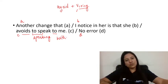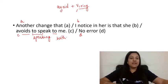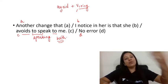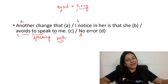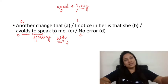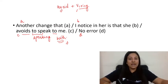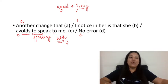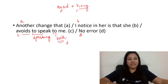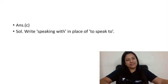Both 'speak to me' and 'speak with me' are correct, but they differ in meaning. 'Speak with' is used when you are conversing — both parties are expected to talk, i.e., a two-way conversation. 'Speak to' is just saying your point. Here the meaning is that she avoids having a conversation with me — she doesn't converse back. So 'with' is used here. There are two errors in this sentence, both in part C.